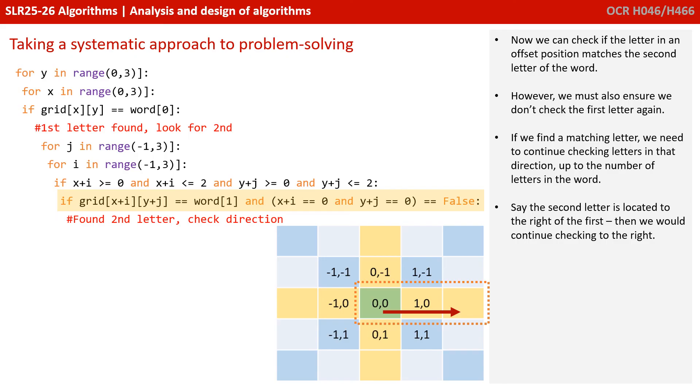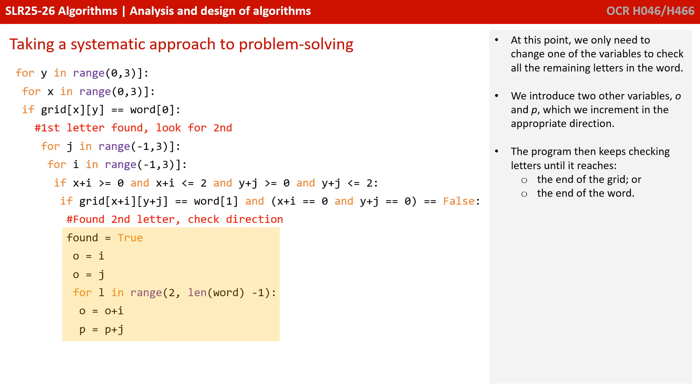In a similar way, if the second letter was in the right direction, we would continue checking right. And so at this point, we only need to change one of the variables to check all the other letters. So we introduced two new variables, O and P, which are then going to be incremented in the appropriate direction, so we can check the other letters.